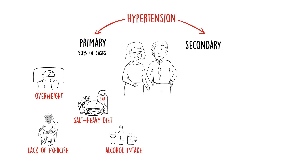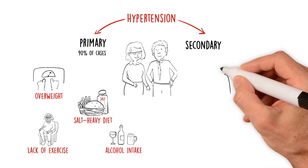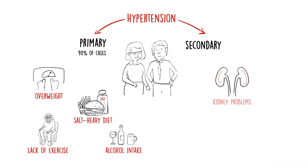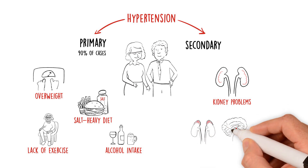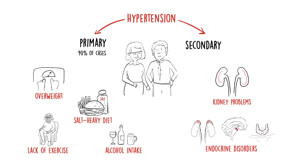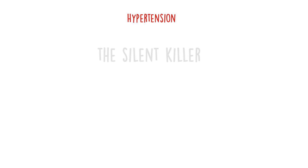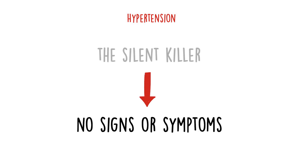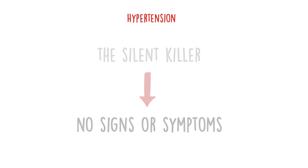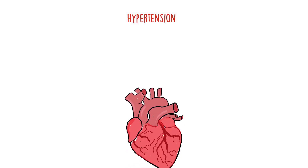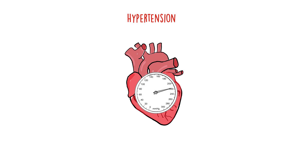Secondary hypertension is caused by an underlying condition, most commonly kidney problems and endocrine disorders. Hypertension is often known as the silent killer because it doesn't usually cause symptoms on its own, but it slowly damages the blood vessels and, in the long term, is a major risk factor for several types of cardiovascular disease.